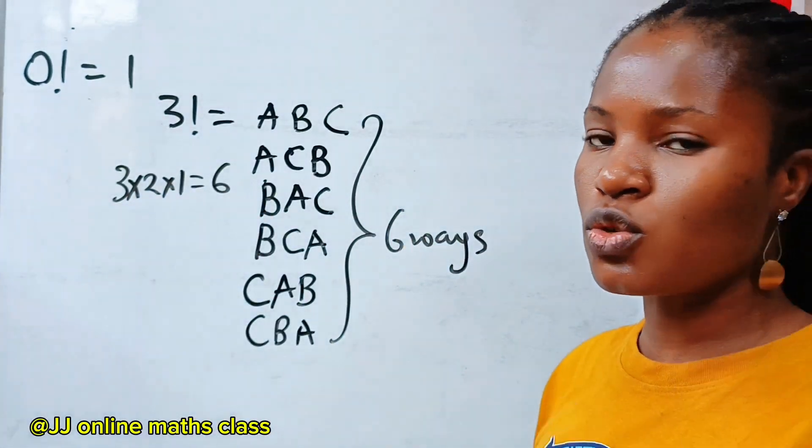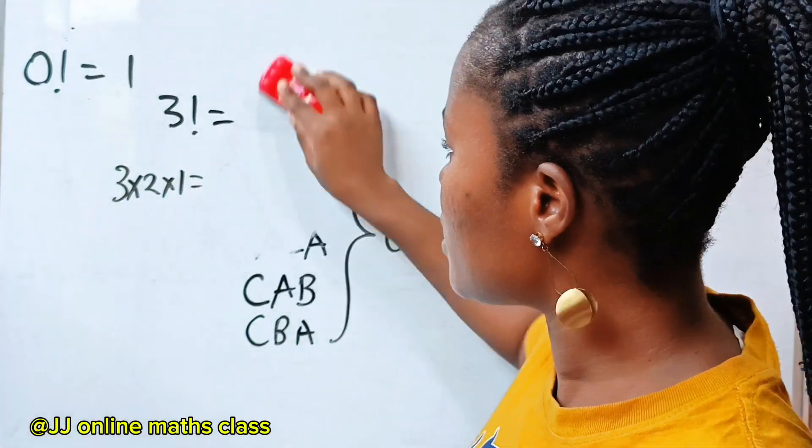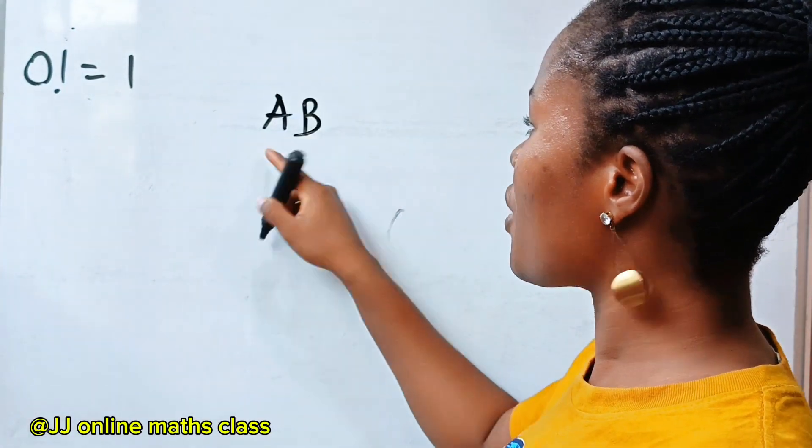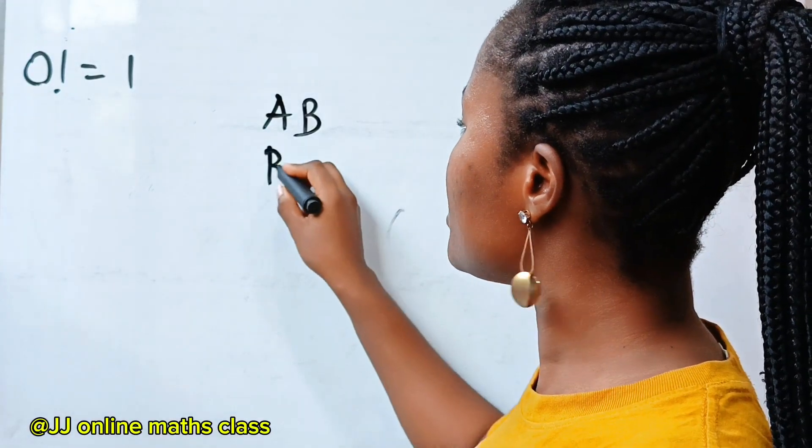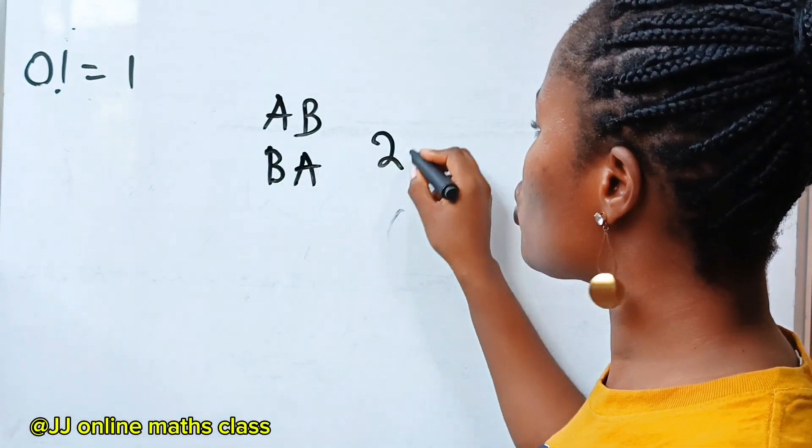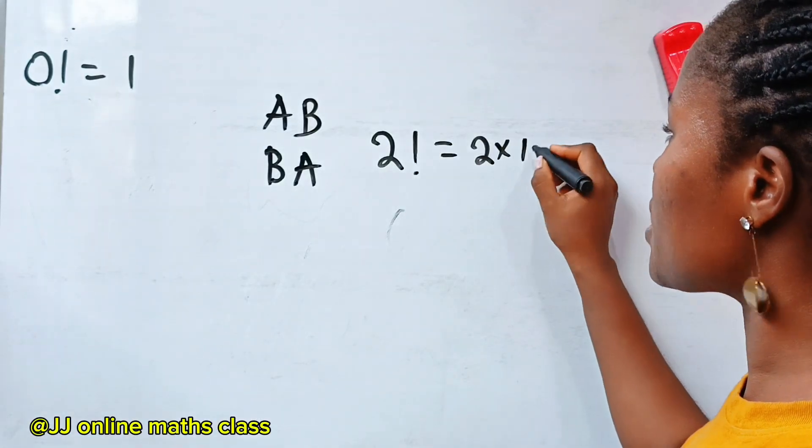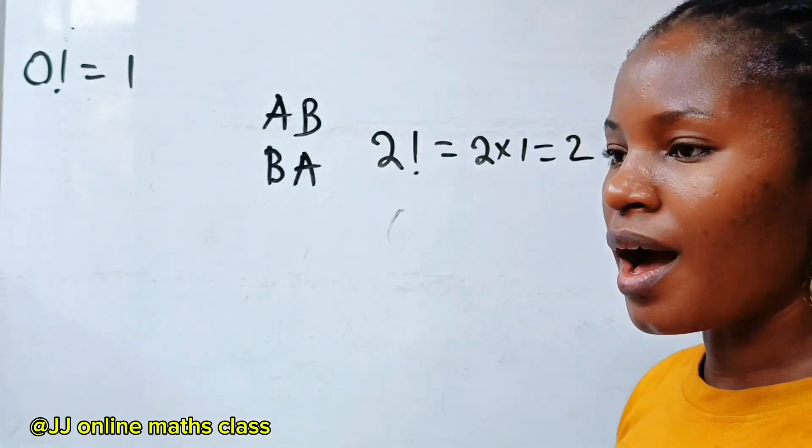Now, if we are given just two things to arrange, two things, so it means that we have A, B. This is already one arrangement. The only way again we can arrange this is B, A. So you can see that two factorial will give us two, which is two times one, which is two.